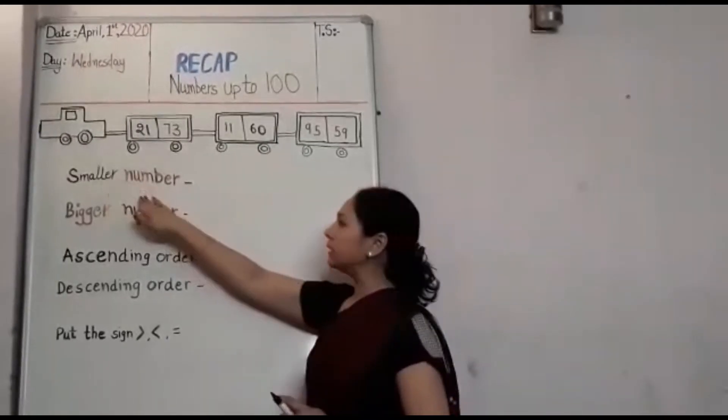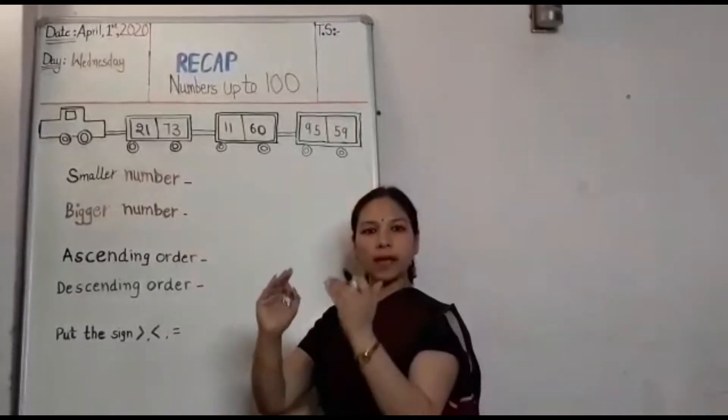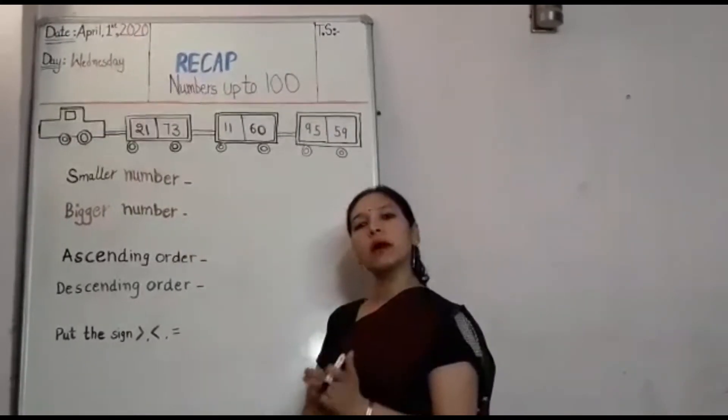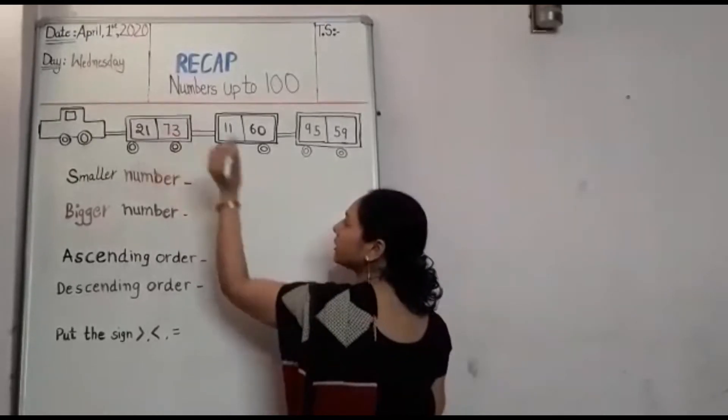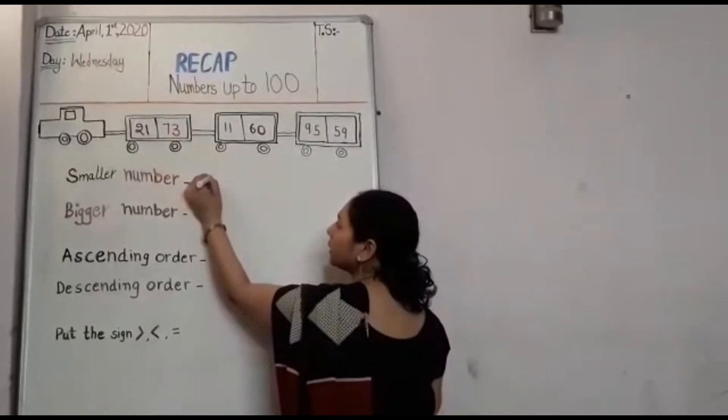Smaller number in counting, major number, sabse pehle aate hain. Jo humara smaller number, agar main numbers ki baat karu, to is mein smaller number hai 21.